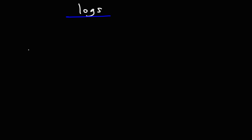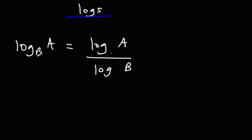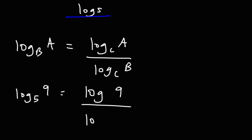The next formula is the change of base formula. Log base b of a equals log a over log b, using a new base c — which can be any number. For example, log base 5 of 9 equals log 9 over log 5. You can choose any new base, such as 24, and it will still give an accurate result. That's the change of base formula — here the base was changed from 5 to 24.